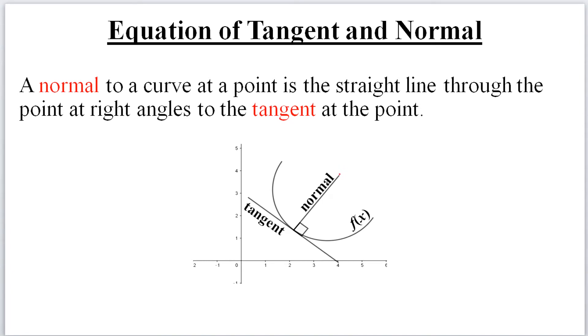The normal passes through the center of a circle and then it meets the tangent at 90 degrees. The tangent touches the curve or the circle.